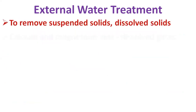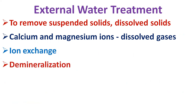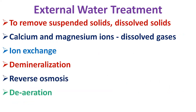External treatment is used to remove suspended solids, dissolved solids — particularly calcium and magnesium ions, which are a major cause of scale formation — and dissolved gases like oxygen and carbon dioxide. The external treatment processes available are ion exchange, demineralization, reverse osmosis and deaeration. Before any of these are used, it is necessary to remove suspended solids and color from the raw water, as these may foul the resins used in subsequent treatment sections. Pre-treatment methods include sedimentation in settling tanks or settling in clarifiers with coagulants and flocculants, and pressure and sand filters with spray aeration to remove carbon dioxide and iron from borewell water.